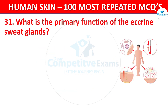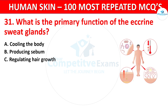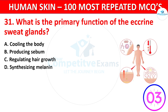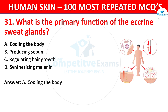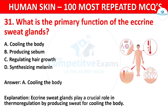Question 31. What is the primary function of the eccrine sweat glands? Your options: Cooling the body, Producing sebum, Regulating hair growth, or Synthesizing melanin. The correct answer is Cooling the body. Eccrine sweat glands play a crucial role in thermoregulation by producing sweat for cooling the body.